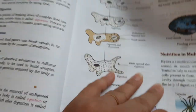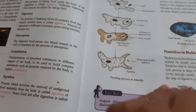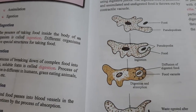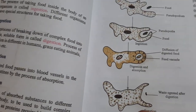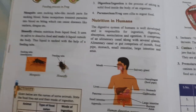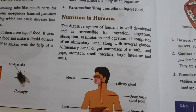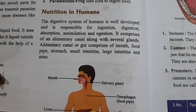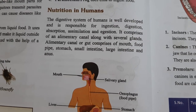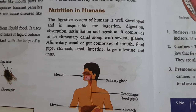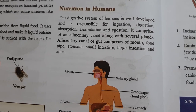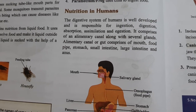Now we move to nutrition in multicellular animals. Multicellular means organisms made by more than one cell. Now we will discuss nutrition in humans. The digestive system of humans is well developed and is responsible for ingestion, digestion, absorption, assimilation, and ejection. It comprises the alimentary canal along with several glands.